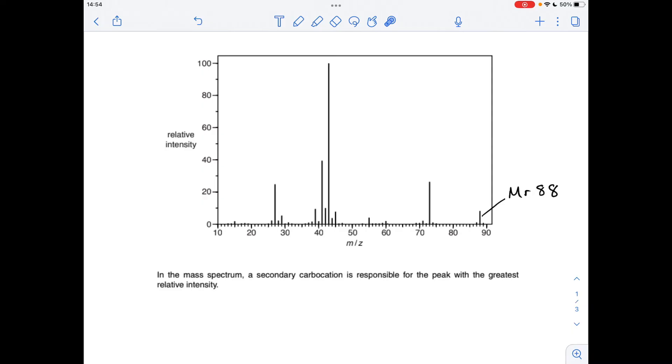Going back to the mass spectrum now, I'm dealing with this information about the carbocation, secondary carbocation responsible for the peak with the greatest relative intensity, so obviously this peak here. So it's got an m/z value of 43 and it's a secondary carbocation, so there's one hydrogen bonded to the carbon plus, obviously two carbon groups, one either side.